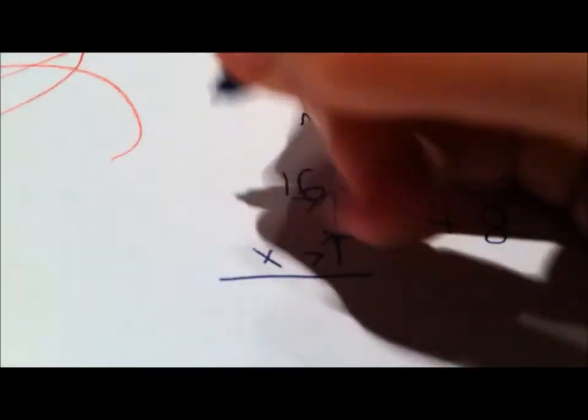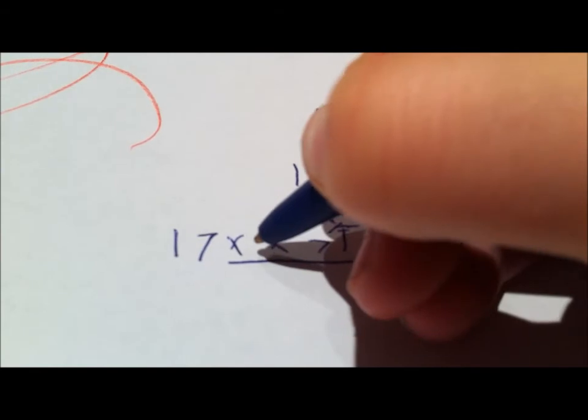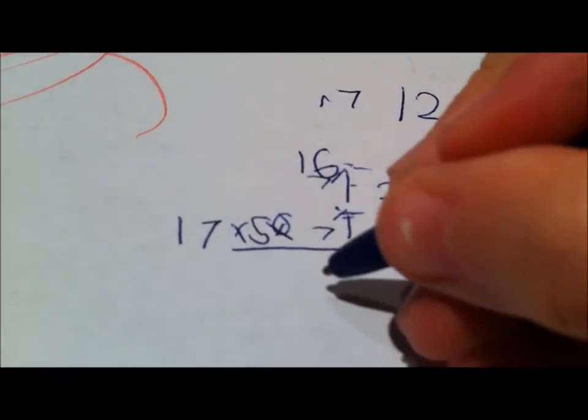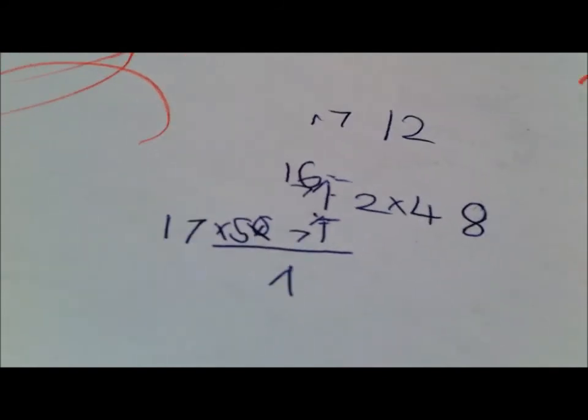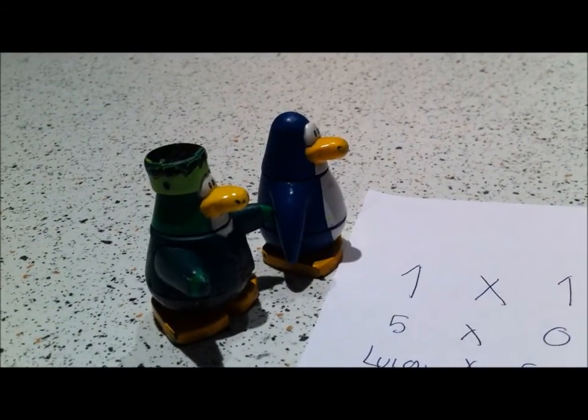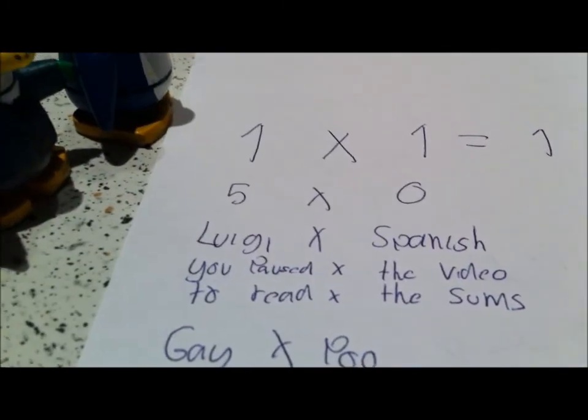And then the sum is seventeen times fifty, which is one. You were the most smartest idiot in the universe. Now what's five times zero?